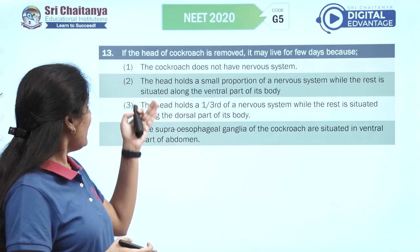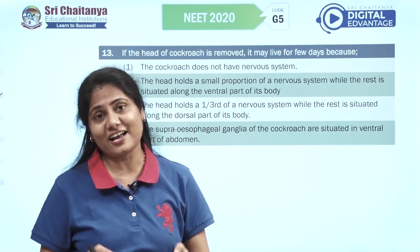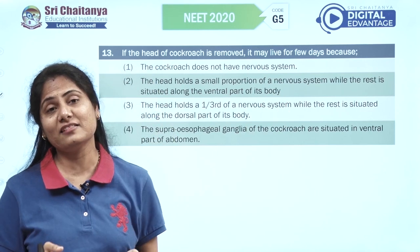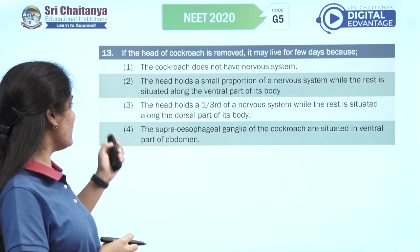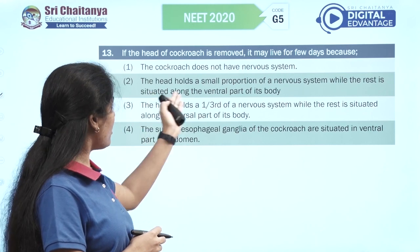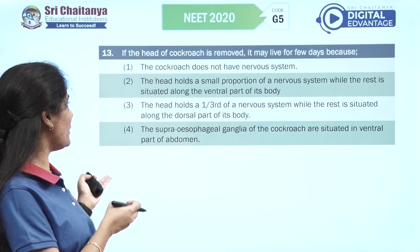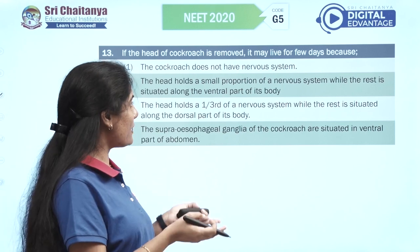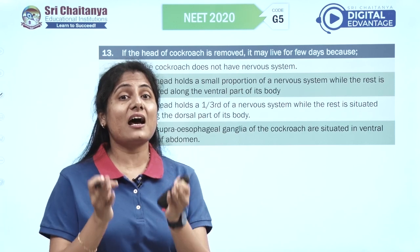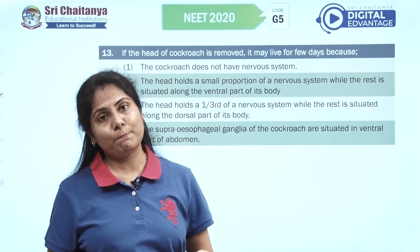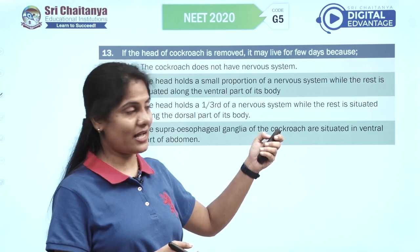If the head of a cockroach is removed it may live for a few days — straight NCERT line — because the head holds a small proportion of the nervous system while the rest is situated along the ventral parts of its body. That is why it only dies of starvation because it loses its mouth parts. Option two is the answer.